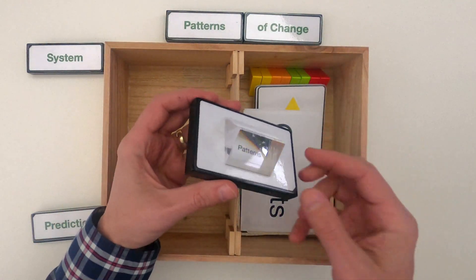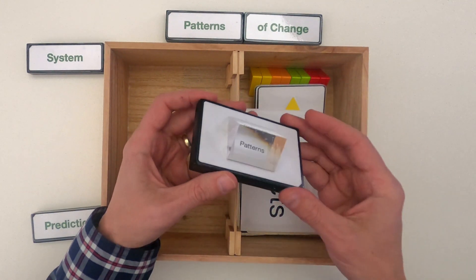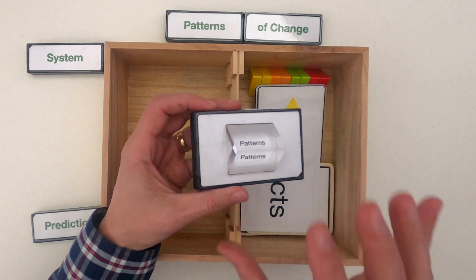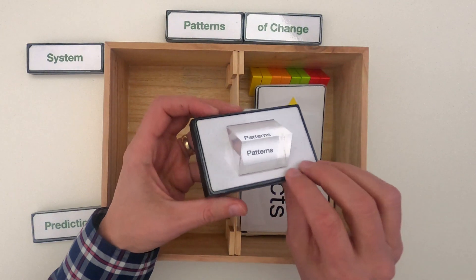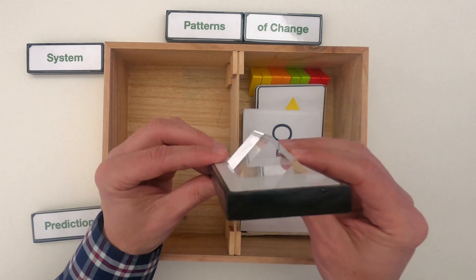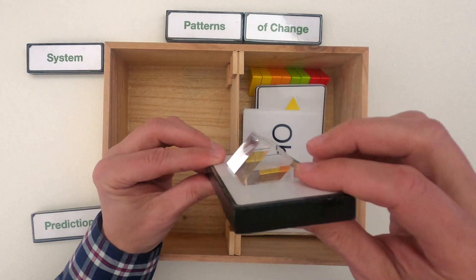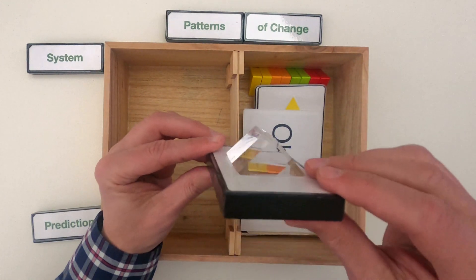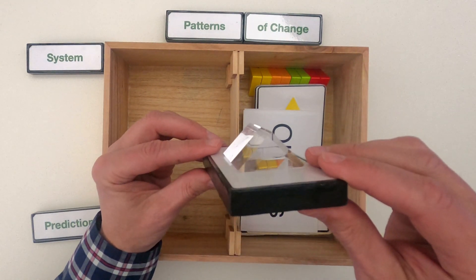The object that represents patterns is always this clear prism, and the reason why is it allows you to look at different things. As we're thinking of patterns of change, I would also point to the triangle on the end. The triangle in science just stands for delta, or stands for change.